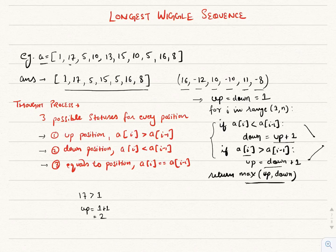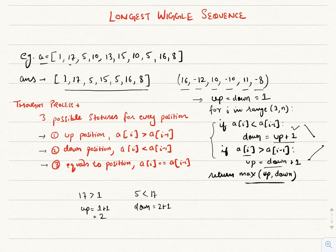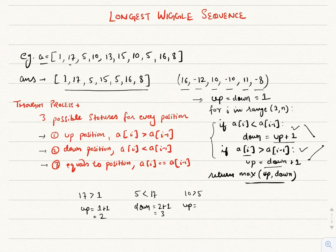The next element is 5. Since 5 is less than 17, it falls to the first condition, so down will be up plus one — that is 2 plus 1, which gives down equal to 3. The next element is 10. Since 10 is greater than 5, it falls to the second condition, so up will be down plus one — 3 plus 1 — which gives up equal to 4.